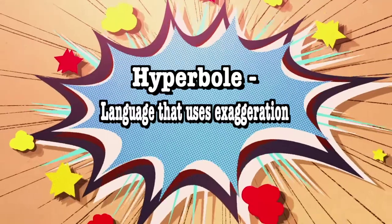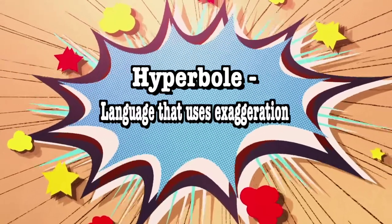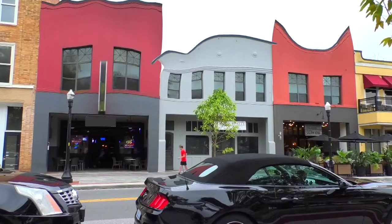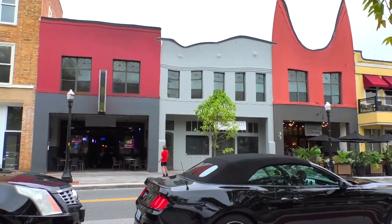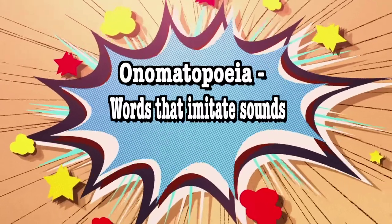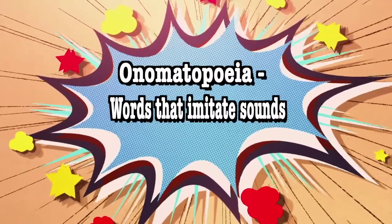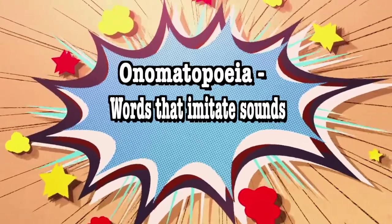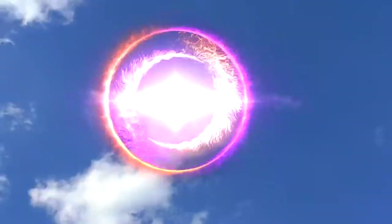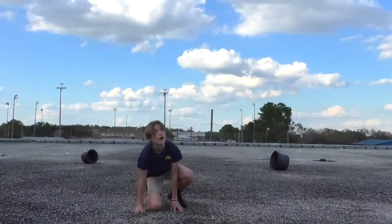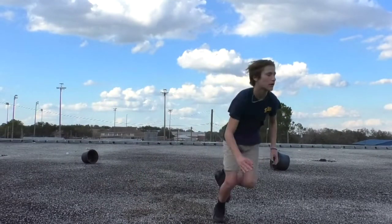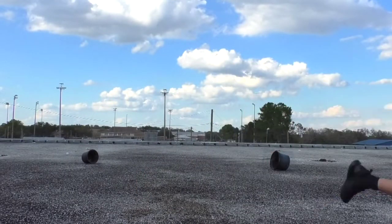Hyperbole is another device which uses exaggeration. For example: 'Milo watched in fascination as the buildings reached into the sky and touched the sun.' What about using onomatopoeia? These are words that imitate sounds. There are four examples of onomatopoeia in this sentence: 'Milo swooped down to land on the roof with a thud as the air shuffled from around him. Confused, he took off with a whoosh.'